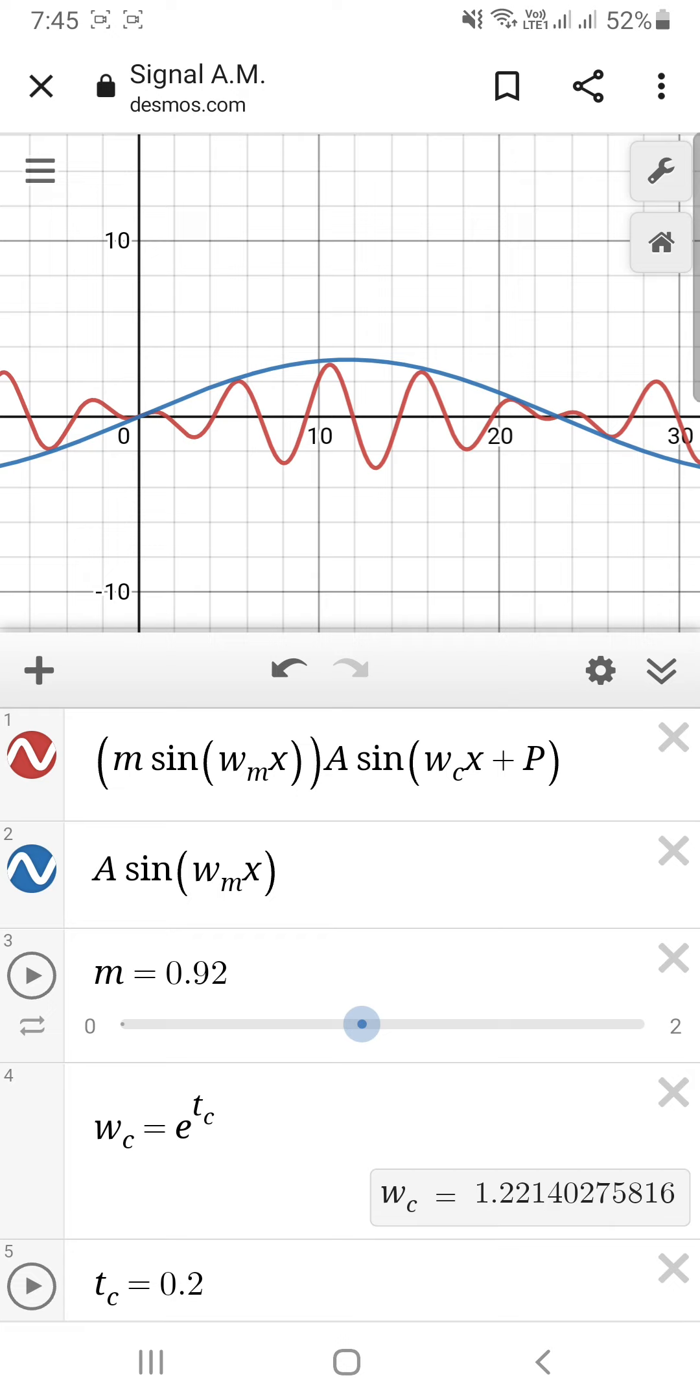So it's basically this blue curve times some factor, and that factor basically scales up the local amplitude. And this blue curve tells how much you want to scale up the amplitude. So A sin(ω_c x + p), that is our carrier wave.